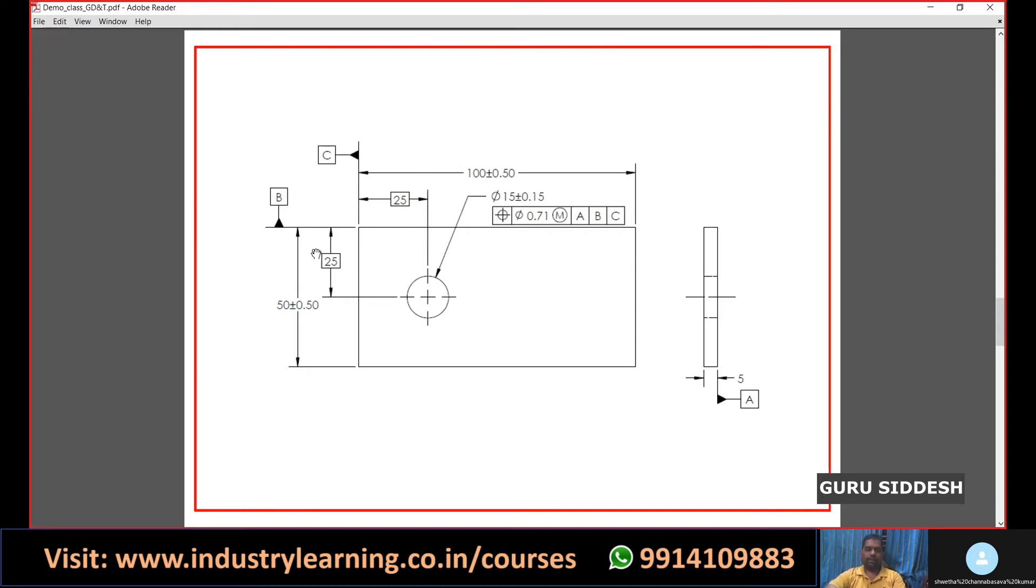You can see datum B and C, from where the hole position is measured. That's why we consider these as the datums. The first one is placed on the base, so we consider that base as datum A. This is how we give datums, basic dimensions, and geometrical tolerance. This is one way of finding geometric tolerance.